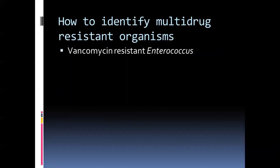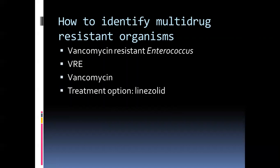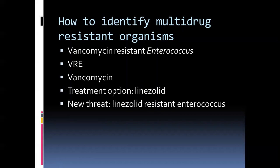The next gram-positive organism is enterococcus — specifically vancomycin-resistant enterococcus, more commonly known as VRE. The laboratory tests vancomycin against it, and that is what is reported in the final report. The treatment of choice for VRE is linezolid, but linezolid has many difficult side effects. Due to its continuous misuse and availability as an oral option in the community, we are now facing an emerging threat of linezolid-resistant enterococcus, and we should be very careful about using linezolid in the outpatient setting.